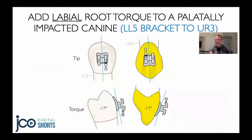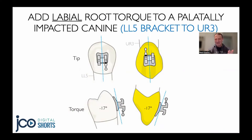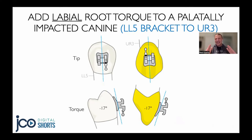If we have a full complement of teeth and a canine that's erupting palatally, we're going to want to add labial root torque. So we can use our mandibular second premolar bracket, but this time properly oriented with the post gingival to take advantage of those 17 degrees of labial root torque.